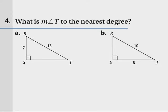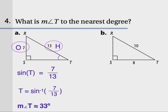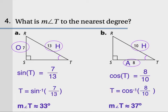Question four. What is the measure of angle T to the nearest degree? So this time angle T is your starting angle. Solve part A. You should get around 33 degrees. Solve part B. You should get around 37 degrees.